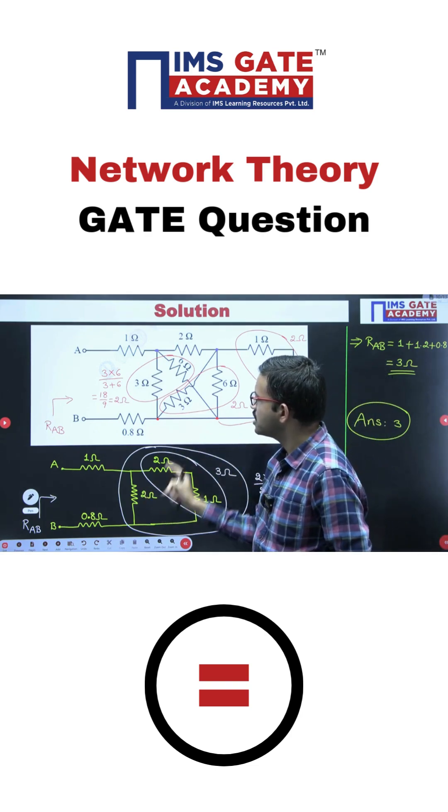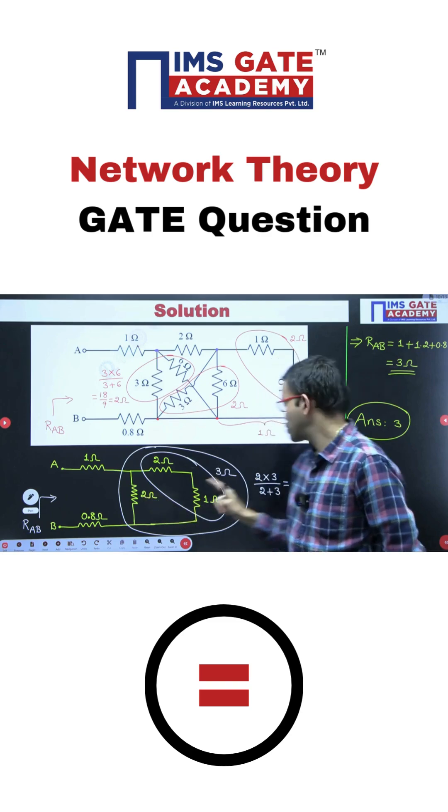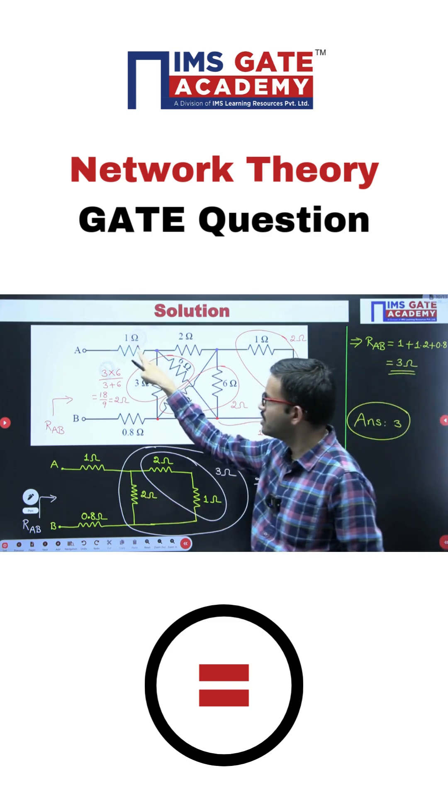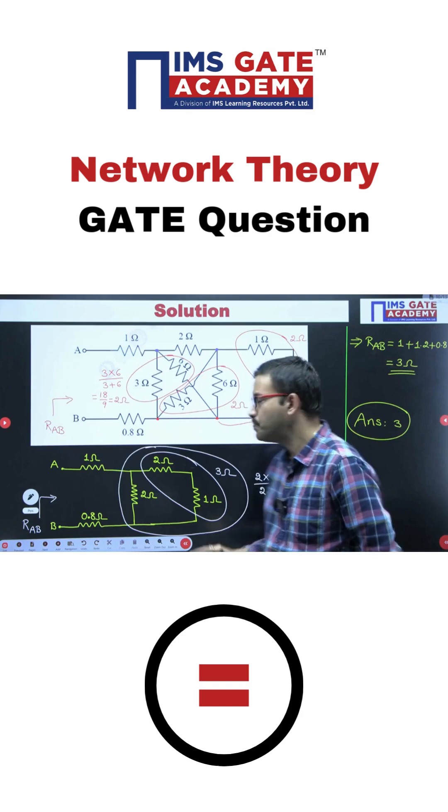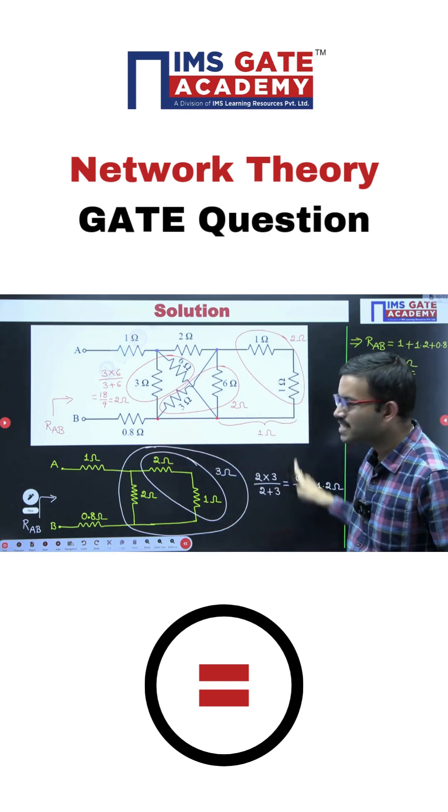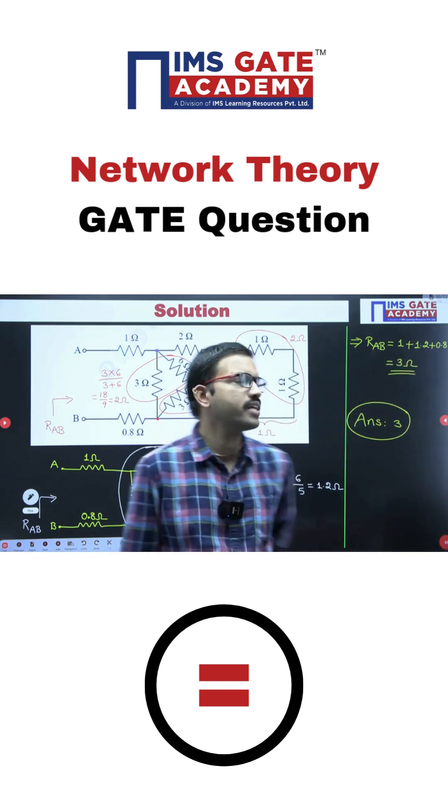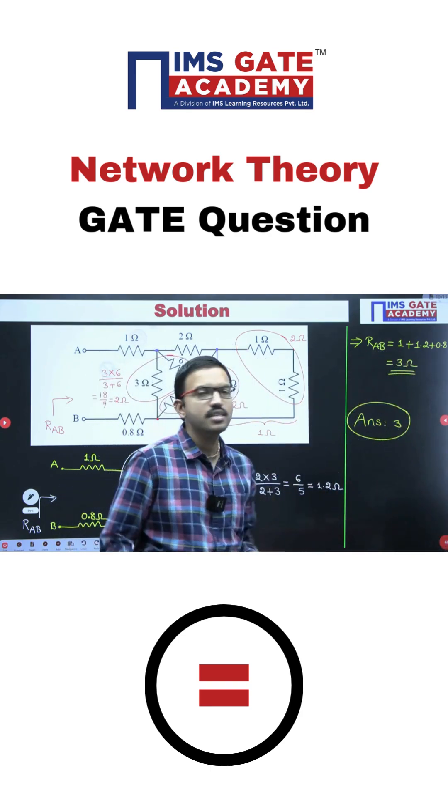After that, that 3 ohm resistor is in parallel to 2 ohm, so equivalent resistance you are getting 1.2. After that, here you are having 1 ohm and then 0.8 ohm and this 1.2. All these three resistances are connected in series, so equivalent resistance you are getting 3 ohm.